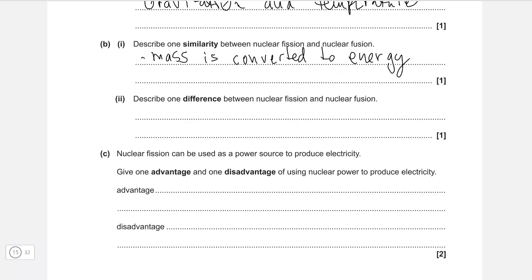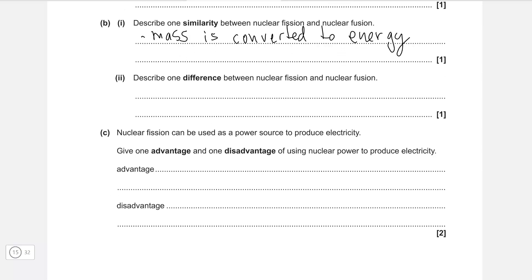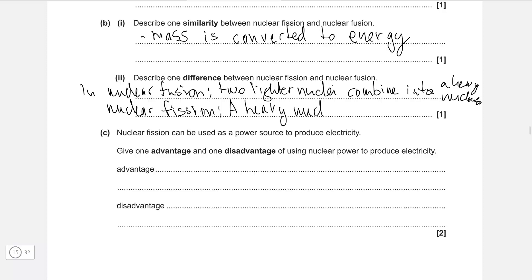Describe one difference between nuclear fission and nuclear fusion. In nuclear fusion, the two lighter nuclei combine into a heavy nucleus. Whereas in nuclear fission, it is the opposite. A heavy nucleus splits into lighter nuclei.